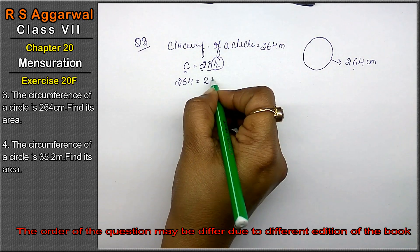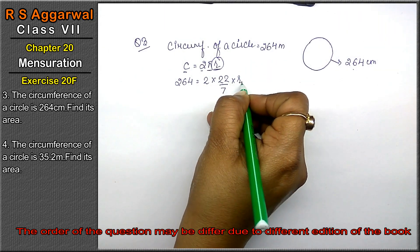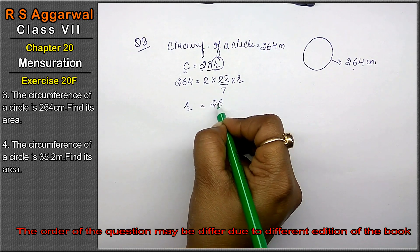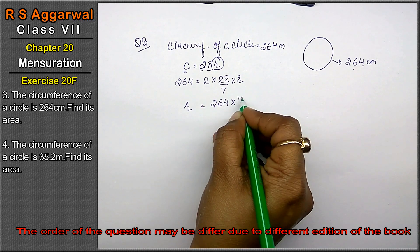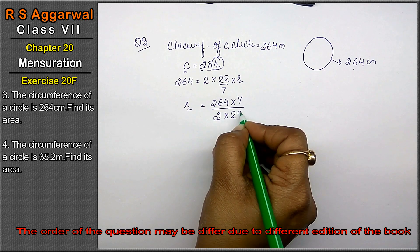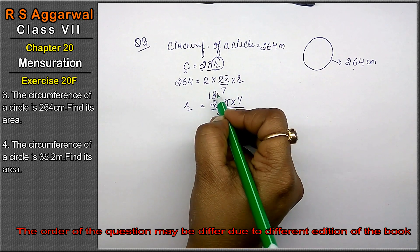Now circumference ki value raghdenghe. 264 equals to 2 into 22 upon 7. R as it is a gya. Toh R as it is raha. 264 as it is raha. 7 yahaan r ke saad divide me. Idha jake multiply me ho jayega. Or 2 into 22 multiply me r ke saad. Tho idha rake divide me chalye jayega. 2 ones are 2. 2 ones are 2. 2 three is a 6.